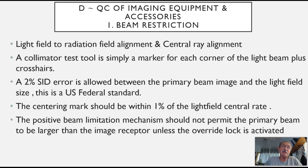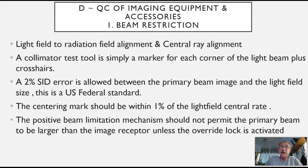One of those things is the light field to radiation field alignment and the central ray alignment. Light field to radiation field refers to the collimator light and how closely registered that is to the actual central ray. We use a collimator test tool, which is a series of paper clips bent into 90-degree angles forming an L. We turn on the collimator light, centered on an image receptor at exactly 40 inches, and place those paper clips over the corners of the collimator light. Then we make an exposure to see how closely the collimator light registers onto the actual central ray.